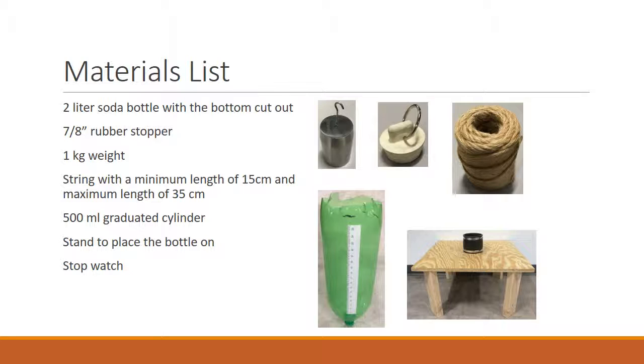The 1 kg weight will be used as the force to pull the plug for the fluid to flow. Using a string of designated length, tie one end to the stopper and the other to the weight. A 500 ml graduated cylinder will be used to measure the desired amount of fluid. The bottle will be inserted in the rubber gasket on the stand for stability. Lastly, a stopwatch will be used to record the time it takes for the fluid to drain out of the bottle.